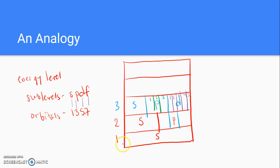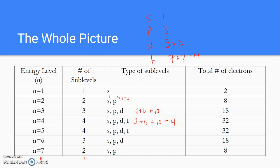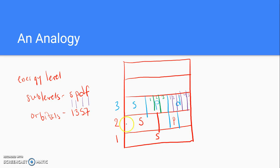What we had here was our first floor only has the S sublevel, and it's a one-bedroom apartment, so I've left it as an open space. The second floor has an S and a P. Remember, energy level 2 has the S and the P sublevels. So here's apartment S, and it's a one-bedroom, so I didn't make any divisions. Here's apartment P.